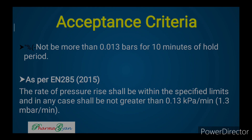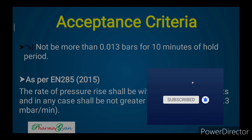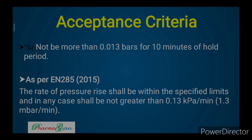Acceptance criteria: not more than 0.013 bar for a 10-minute hold period. As per EN 285-2015, the rate of pressure rise shall be within the specified limits and in any case shall not be greater than 0.13 kPa per minute, or 1.3 mbar per minute. So according to EN 285-2015, the acceptance criteria for vacuum leak test is that pressure rise should not exceed 0.13 kPa/min or 1.3 mbar/min — below this is acceptable, but beyond this the test fails.